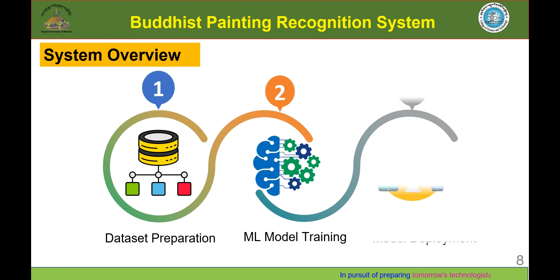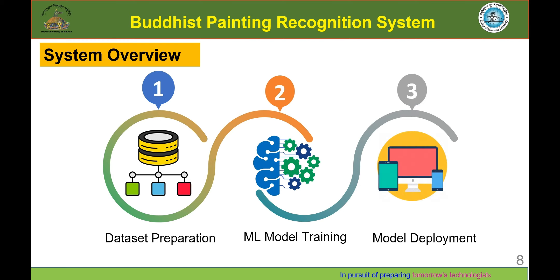Let me explain the brief system overview. First, we collected a dataset for our Buddhist paintings, then we trained a machine learning model, and then we deployed our model on our mobile and web application.